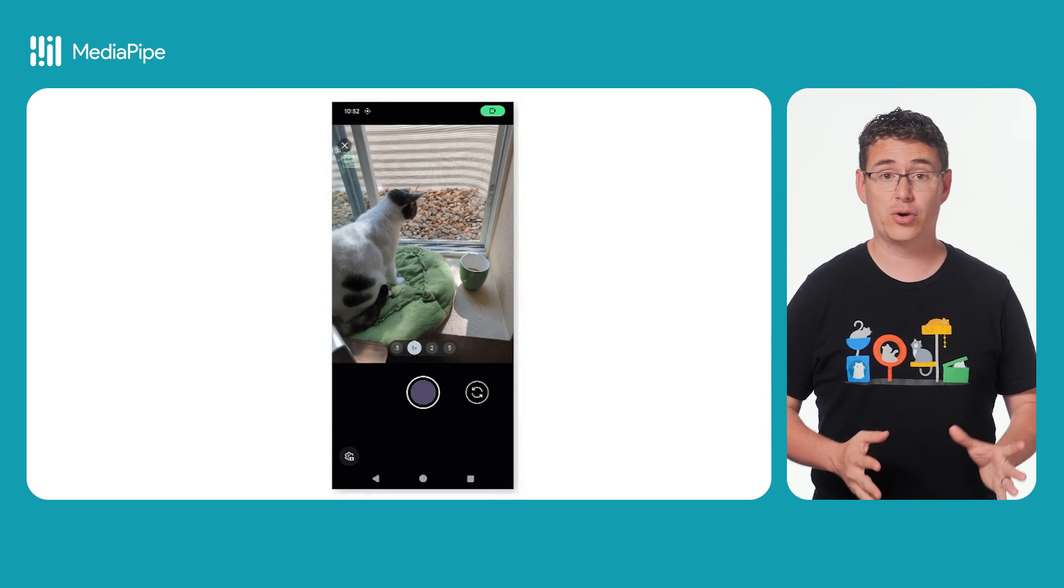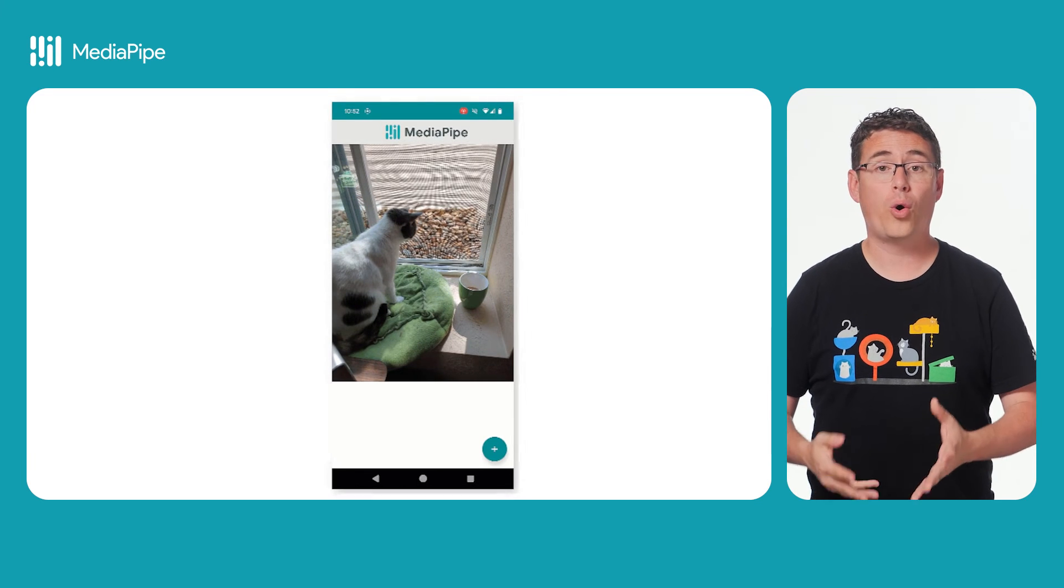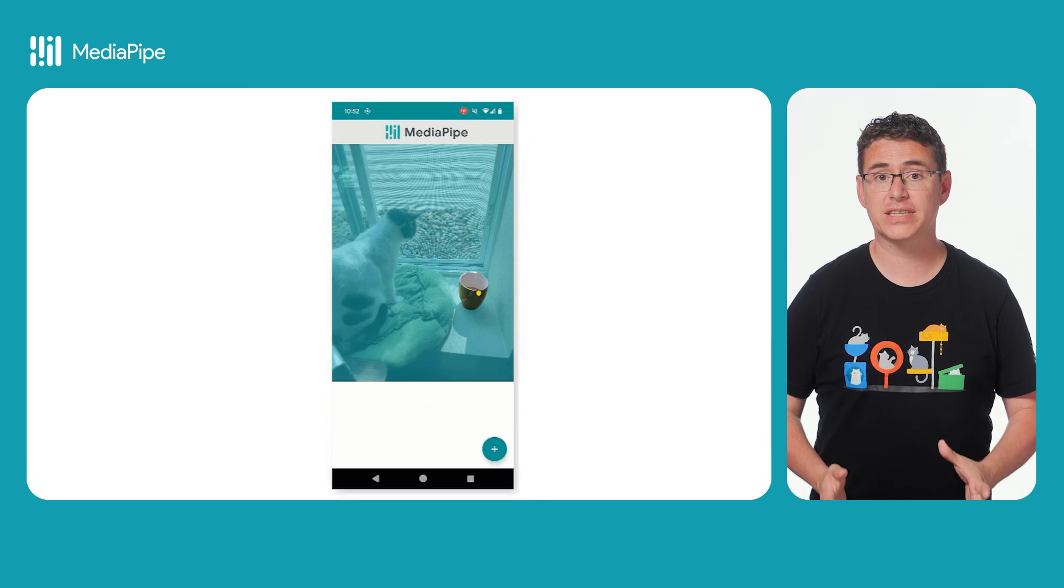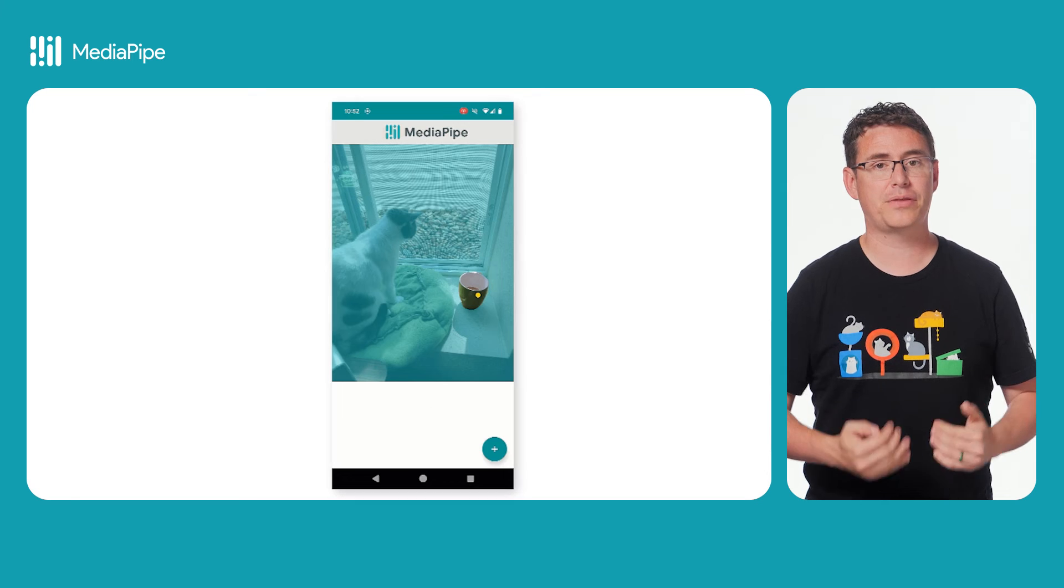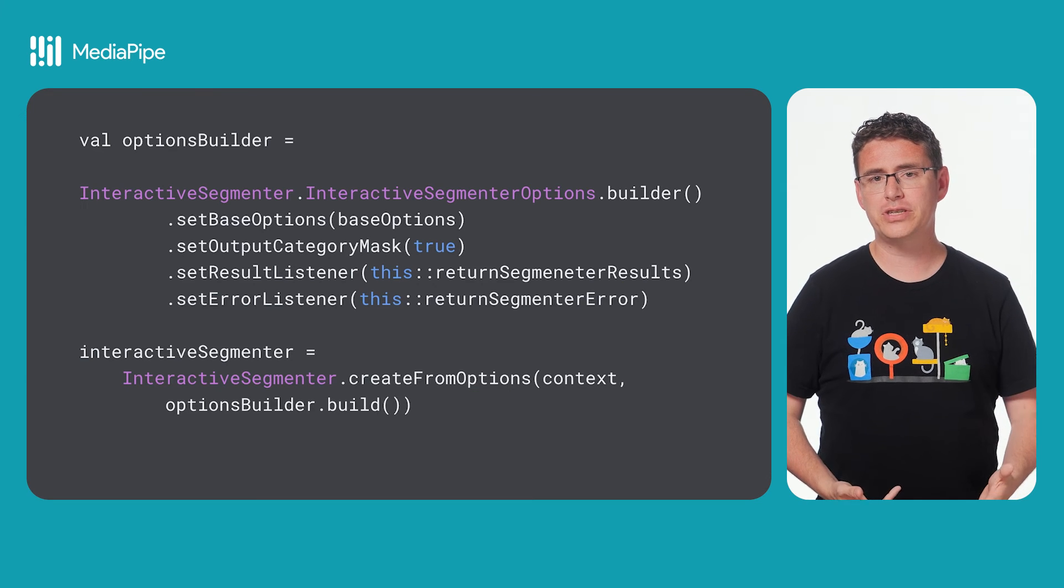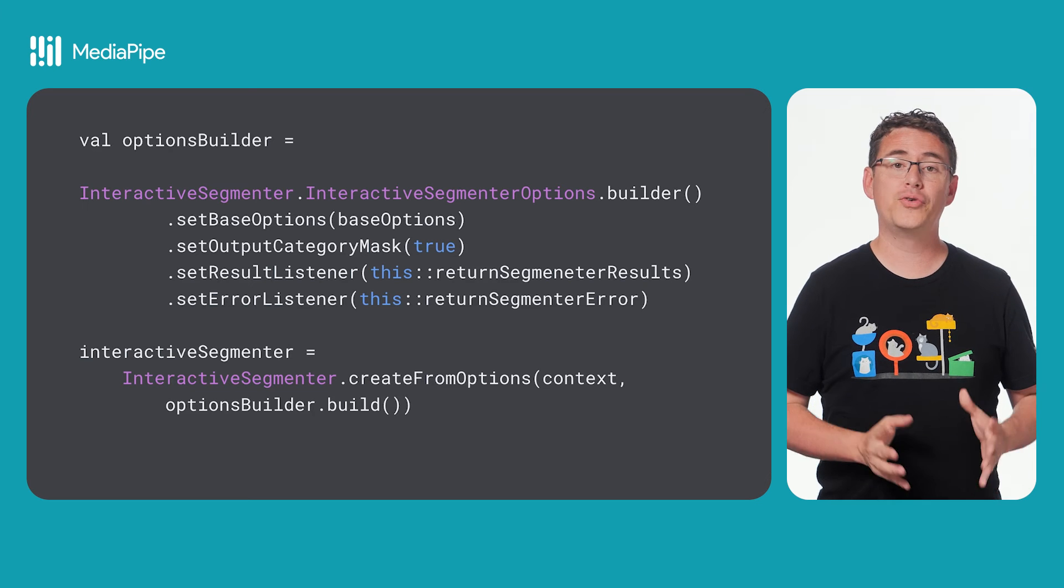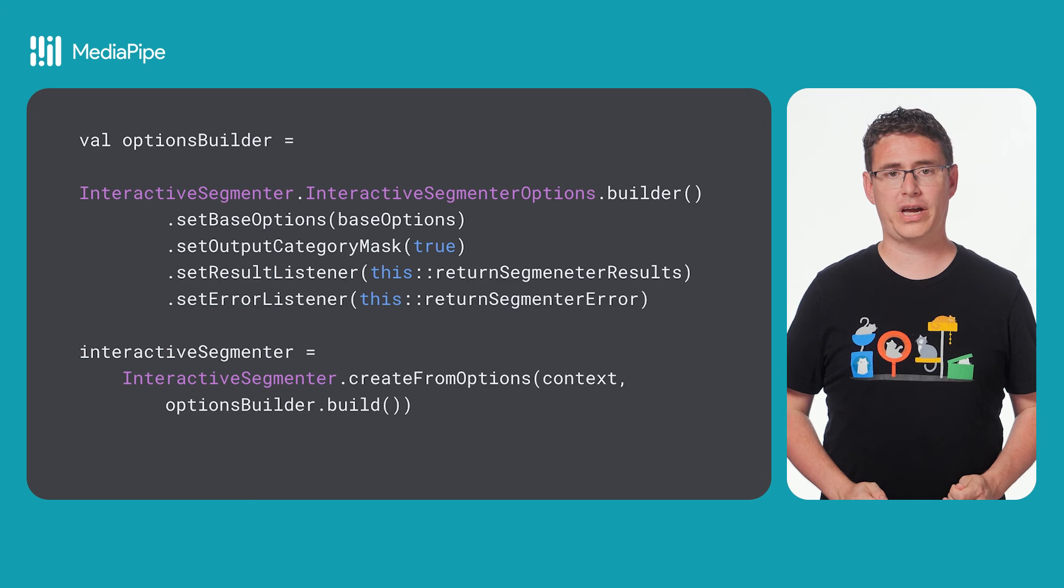The final topic we'll cover is interactive segmentation. This task takes an image and a region of interest, which itself can be either a single point on the image or a series of connected points, and returns a mask for that object that the interactive segmenter thinks may represent the main object in that region. The setup for this should look fairly familiar to you from earlier in this video, though now you will create an interactive segmenter object to handle all of the underlying work.